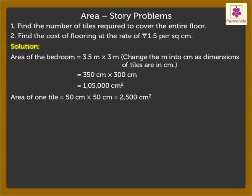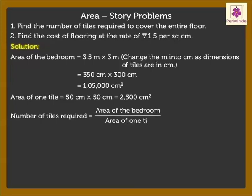Now, to find out the number of tiles required to cover the entire floor, we need to divide area of the bedroom by area of one tile, which is equal to 1,05,000 upon 2,500, which is equal to 42 tiles.